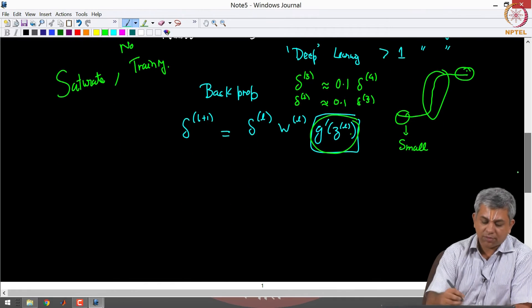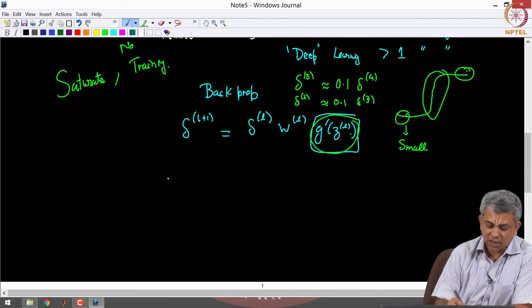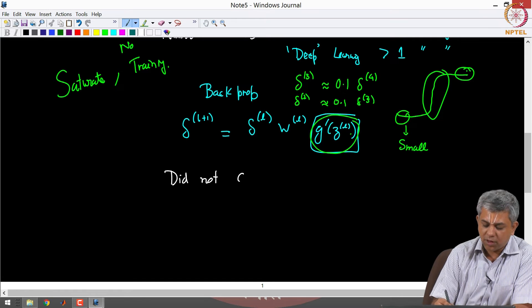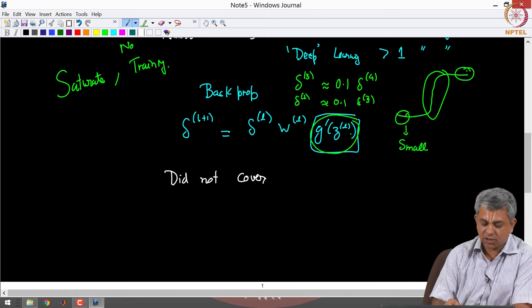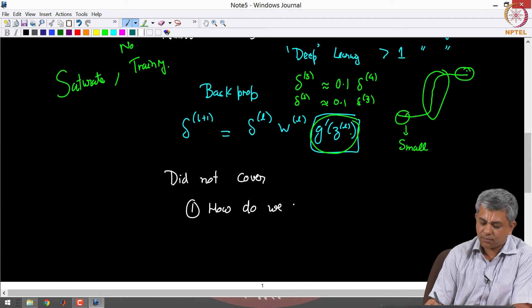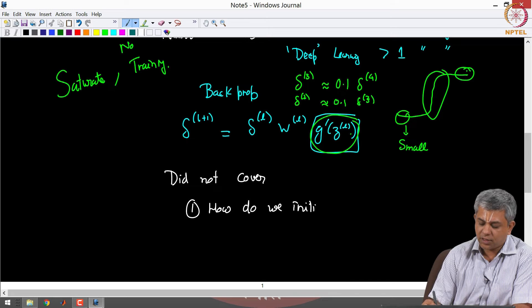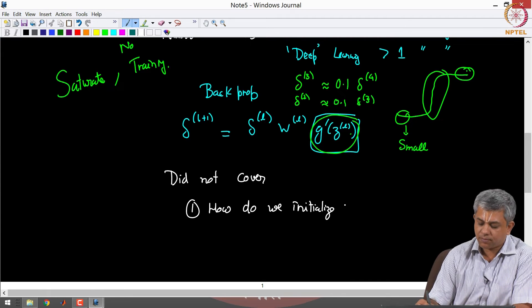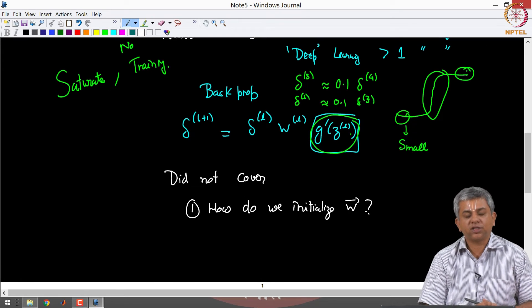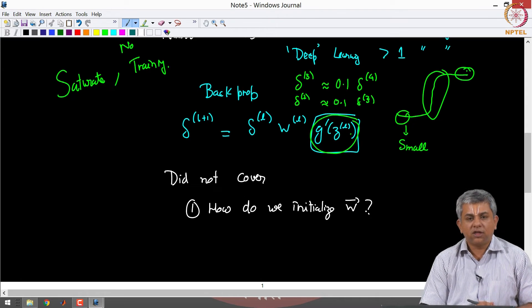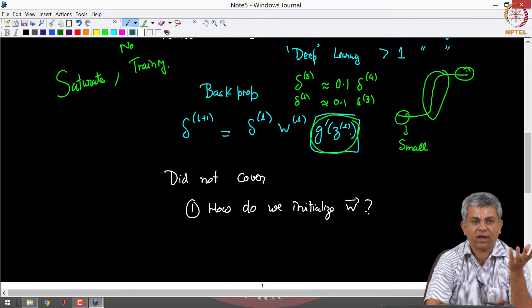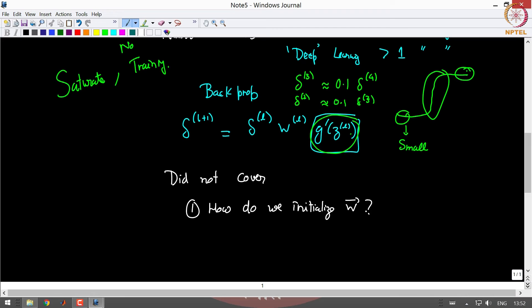What is it that we did not cover? One was how do we initialize W? As we saw even for logistic regression or neural networks the minimum is not unique. Since it is not unique, how you initialize actually has an effect on how your neural network trains.